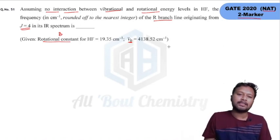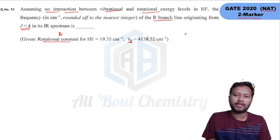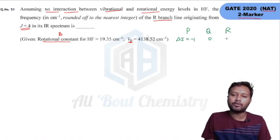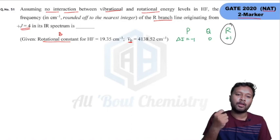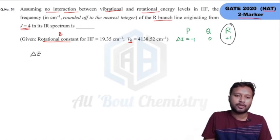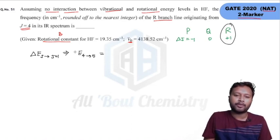To solve this, you need to understand what the R-branch is. There are three types of branches: P-branch (ΔJ = −1), Q-branch (ΔJ = 0), and R-branch (ΔJ = +1). So the R-branch involves a transition from J to J+1. Since the line originates from J=4, the transition is from J=4 to J=5. Now calculate the rotational energy difference for this transition using ΔE = BJ(J+1).